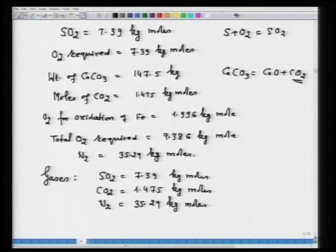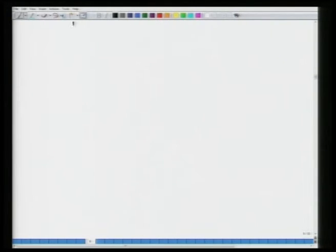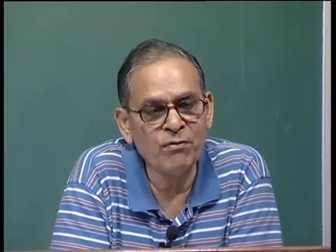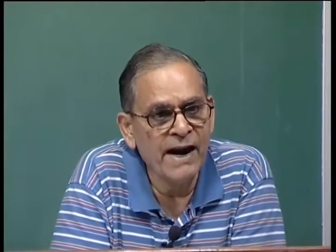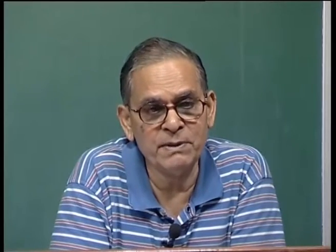The basis of calculation for heat balance is always 298 K unless otherwise specified, because heat content and Cp values and heats of formation are all available at 298 K. You can choose any reference temperature, but then you must convert all available values to that temperature.